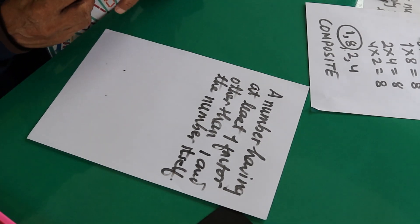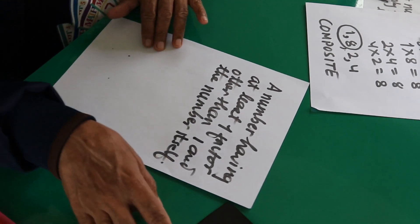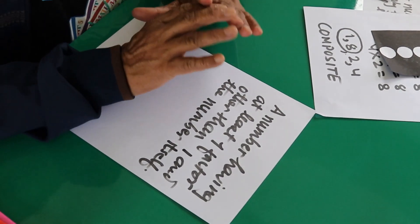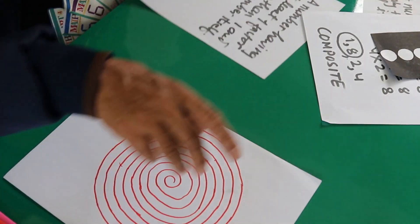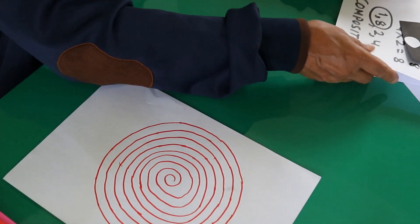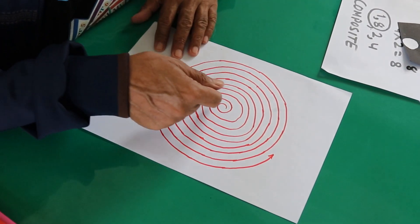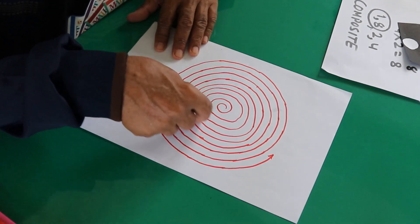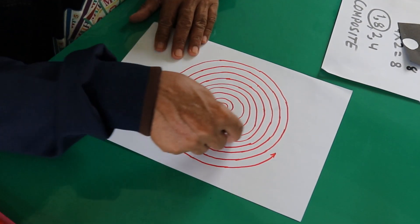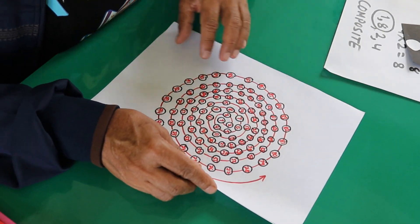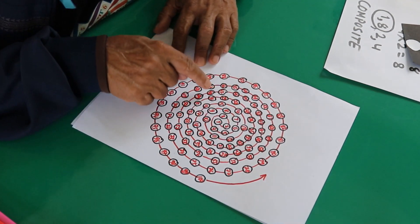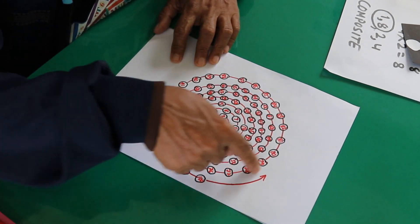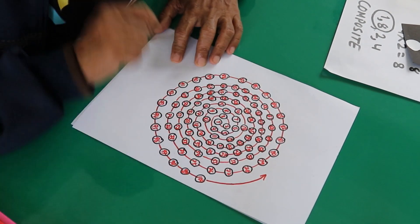So this type of number is called composite number. Therefore, my dear friends, in our names there are number of alphabets, either they are prime numbers or they are composite numbers. Just to find the prime and composite number, let us make a spiral like a galaxy this way. Write the numbers from one to 100. Here I have written one, two, three, four, five, six, seven, eight, and I have gone round about it till 100.